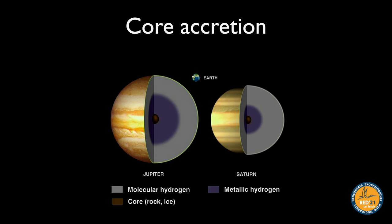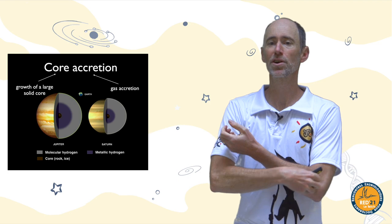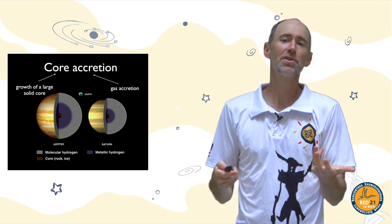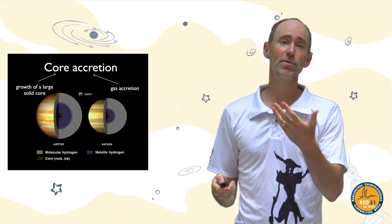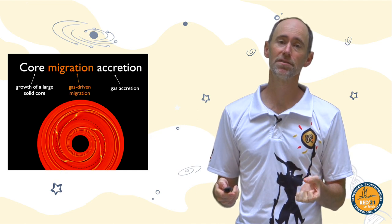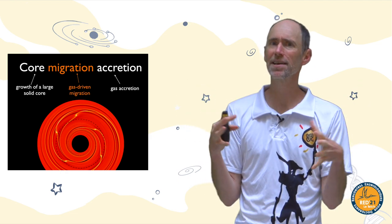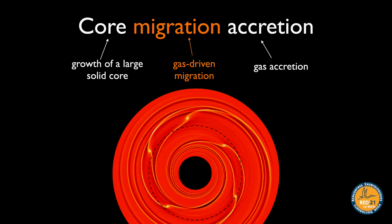The core accretion model is the predominant one. It's motivated by the idea that giant planets have cores slightly more massive than Earth with gas on top, so they form inside-out: first the core, then pile gas on top. These days it's more reasonable to call it the core migration accretion model, because cores are the right mass to migrate quickly, and they must form within an environment rich in gas — the same gas that makes the giant planet and drives migration.